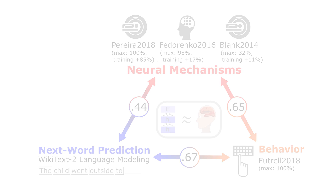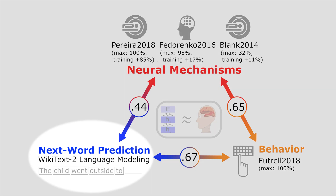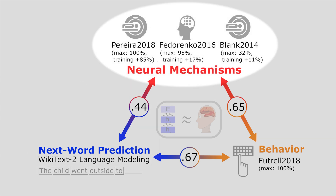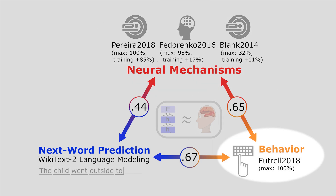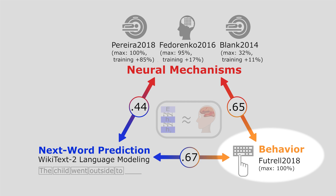What I find fascinating is that we discovered several crucial relationships. Models that are better at predicting the next word are also better able to predict neural responses in human brains. And models that better predict neural responses are also better models of behavior — in this case, self-paced reading times. Models better at predicting the next word also better predict human reading times. So we're really able to bring these three things together: a normative task, neurons, and behavior.